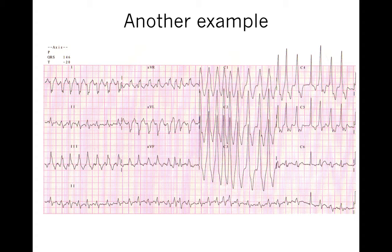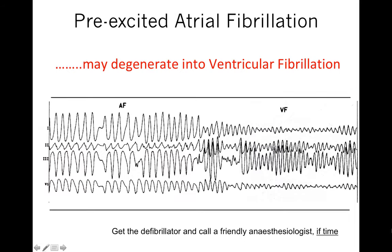Here's another example of pre-excited atrial fibrillation — a wide complex tachycardia that is irregularly irregular with all QRS complexes looking similar. Pre-excited atrial fibrillation is not benign and can degenerate into ventricular fibrillation and cause sudden death. The rate is so high it can cause ischemia within the heart. Hence, it is a medical emergency.